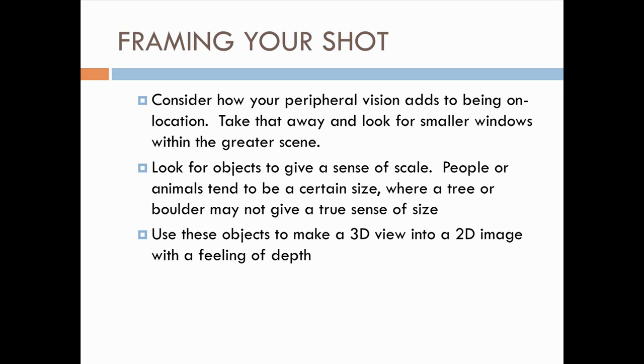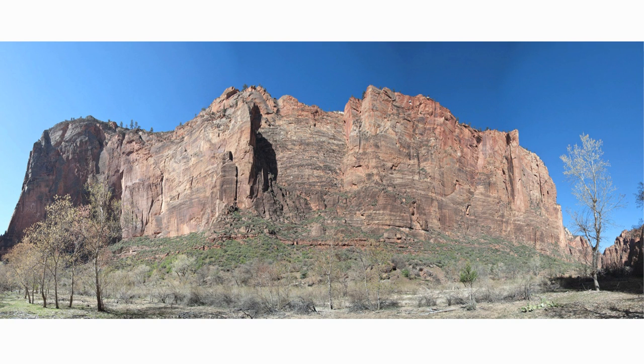Your peripheral vision adds to your experience out there, and you see things three-dimensionally with two eyes. When you shoot, unless you have a 3D camera, you're producing a 2D image, so you have to think of ways to convey depth. One thing you can do is place elements at your foreground, middle ground, and background. Getting the tripod down low and showing the ground as it recedes helps, and including something as a scale reference is really helpful.